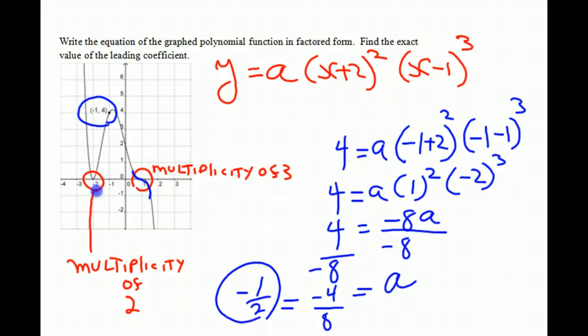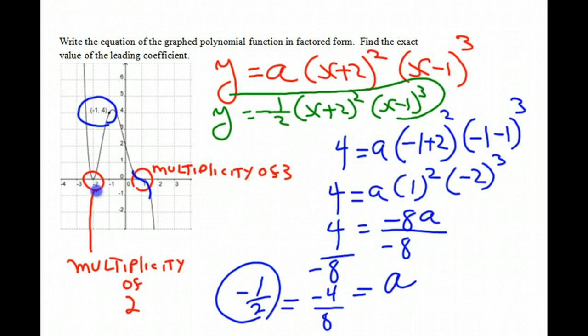And now we know what our final equation is going to be. We'll write it up here in green. We get y equals negative 1 half times x plus 2 squared times x minus 1 cubed. And that is our answer.